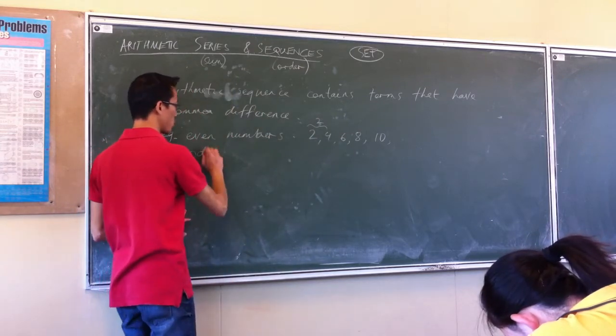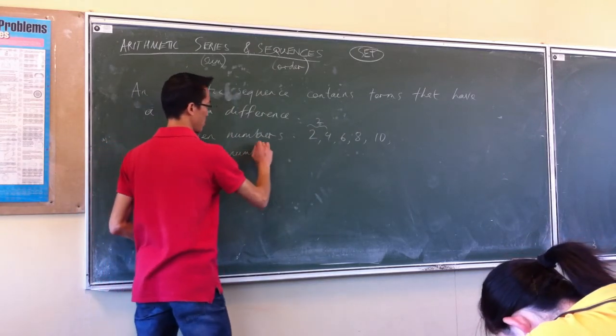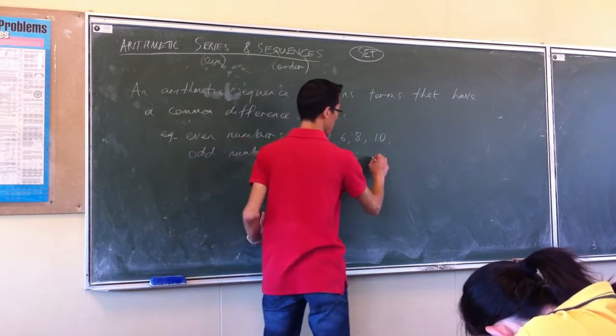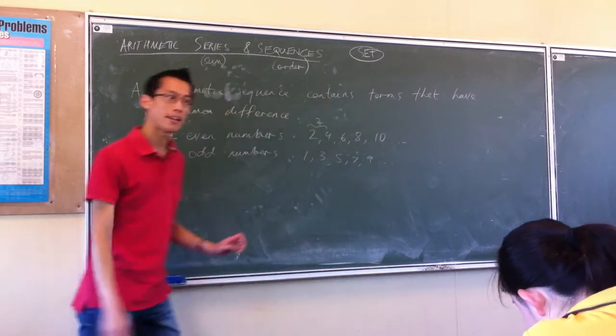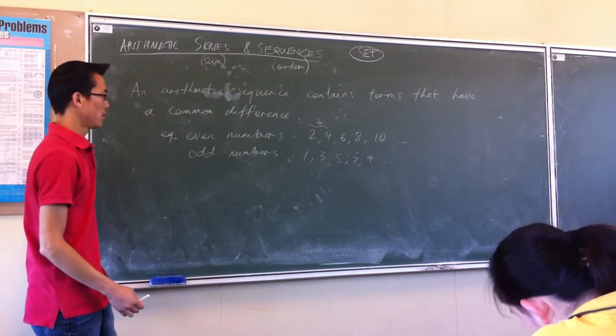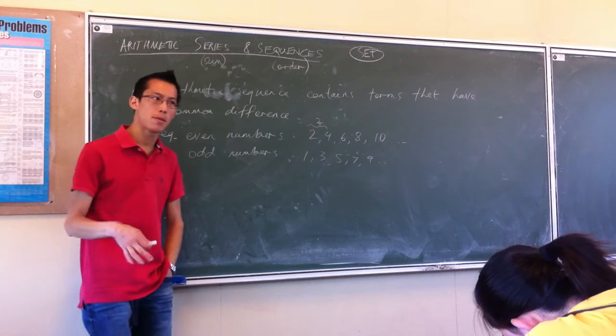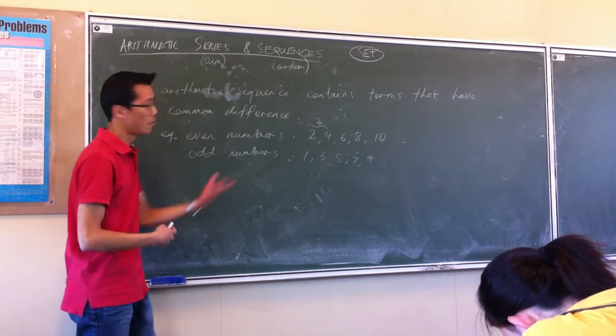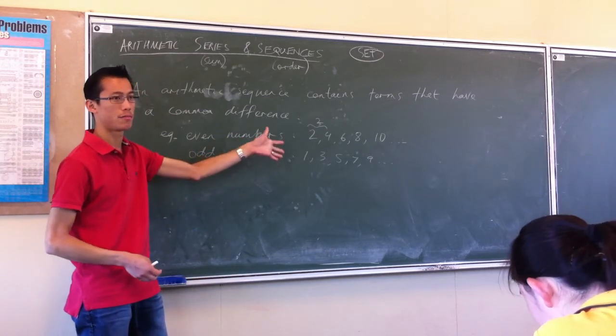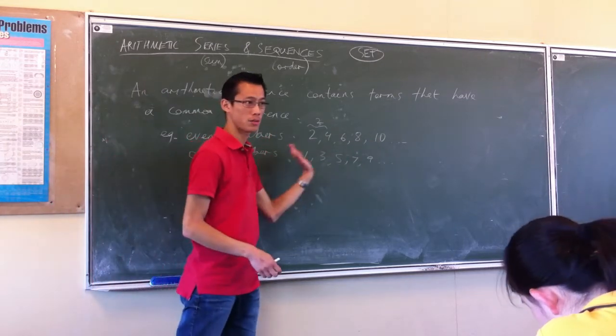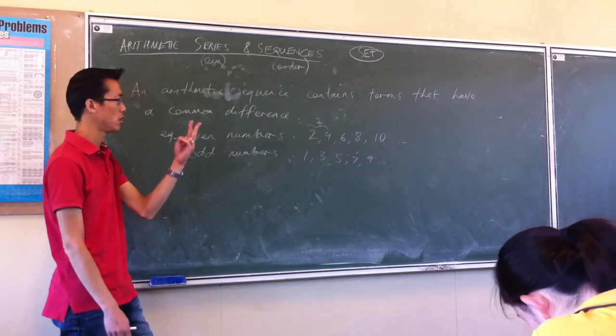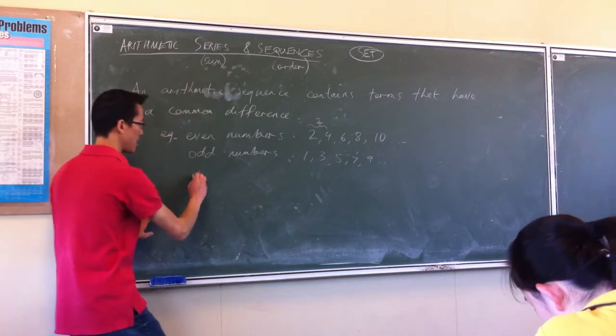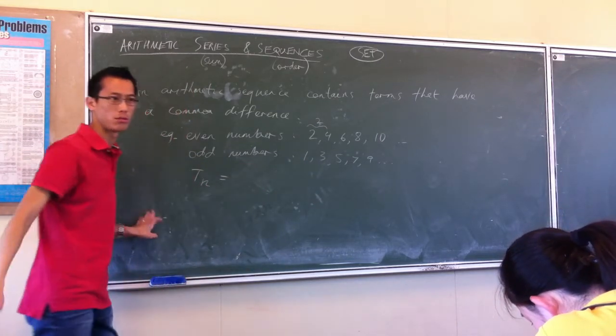In the same way, the odd numbers are also an arithmetic sequence. In fact, they have the same difference, just a different starting point. Do you remember before, we were defining three different ways to actually specify what makes up a sequence? The first way, you can see on the board, is we just name a few terms. The second way was to give you a definition for each individual term. So we'd say T of n is equal to something.